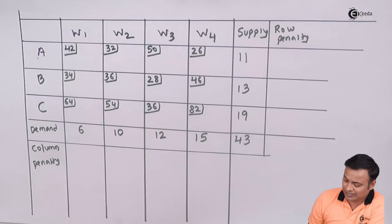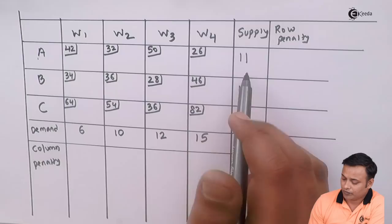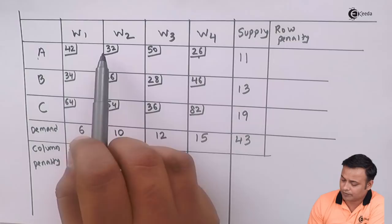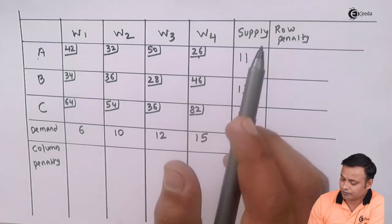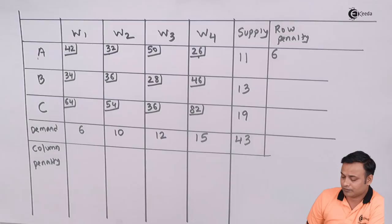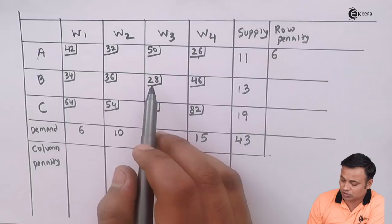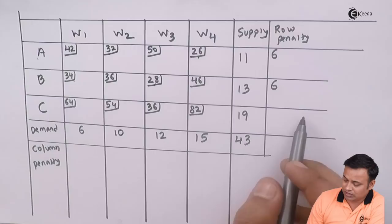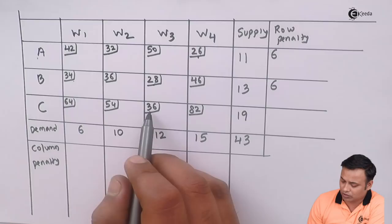Now let's try to understand what is the penalty. In the first row, if you look at the cells and their cost, which is the lowest possible cost? 26. Which is the next possible lowest cost after 26? 32. The difference between 26 and 32, that is 6, is called as the penalty of that cell. In the same manner, if you look at the second row, my lowest cost is 28 and my next lowest cost is 34.